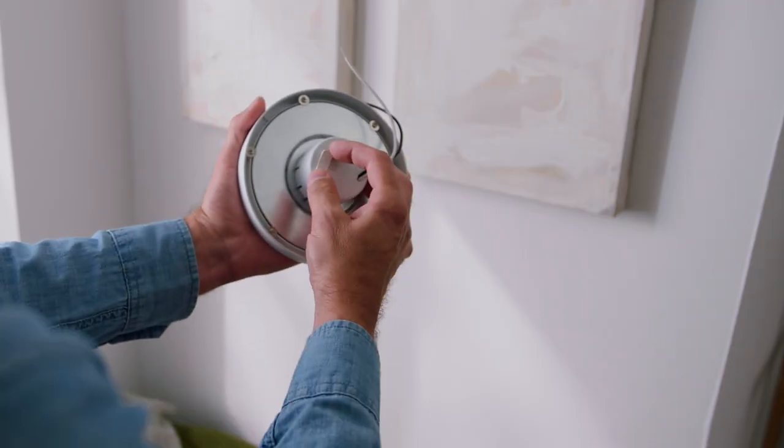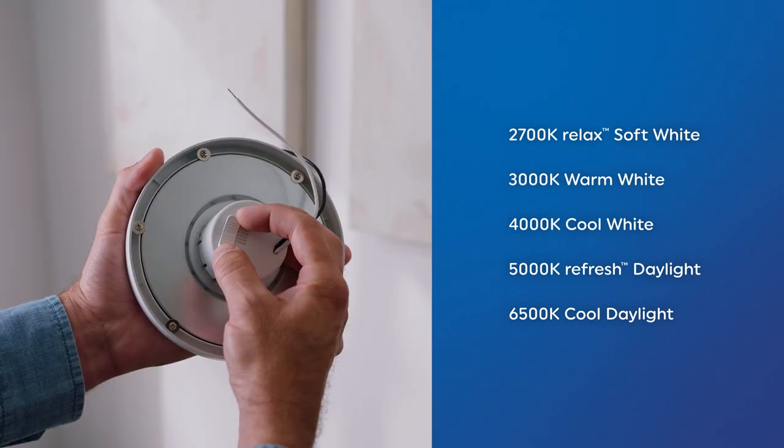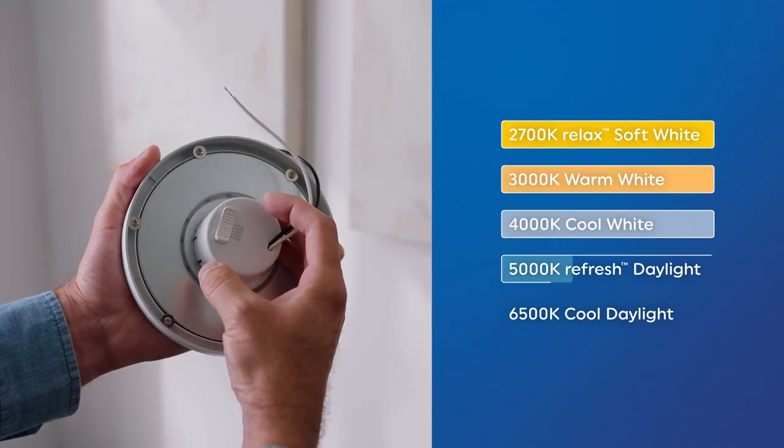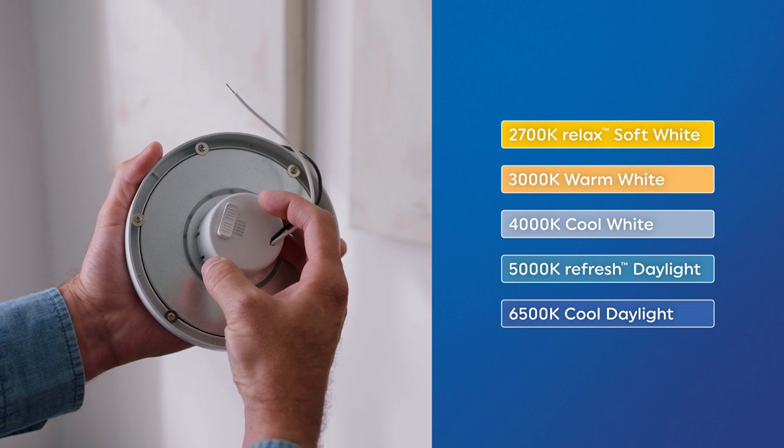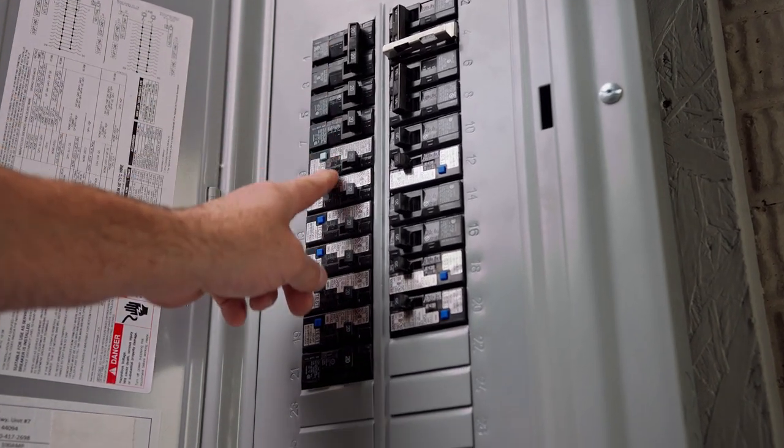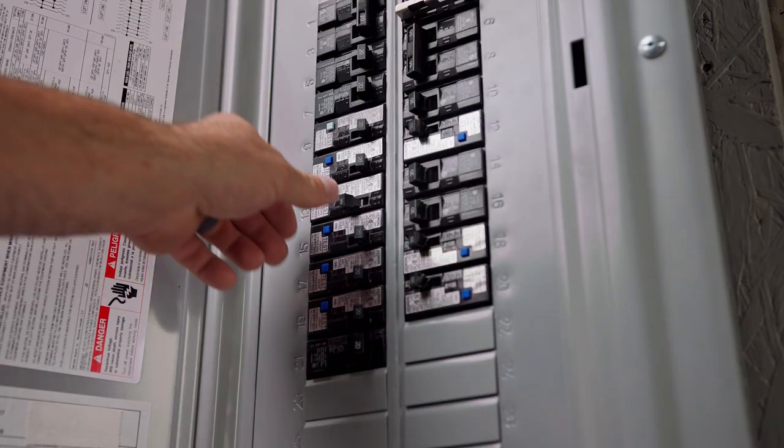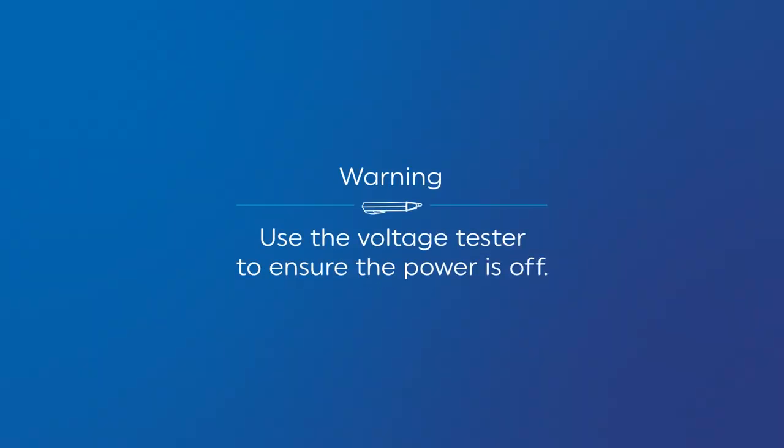Start by choosing your preferred color from five high definition options: Relax, warm white, cool white, refresh, and cool daylight. Then, before you continue, turn off the power source at the main circuit breaker and use the voltage tester to ensure the power is off.